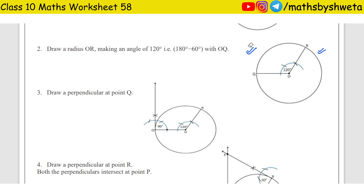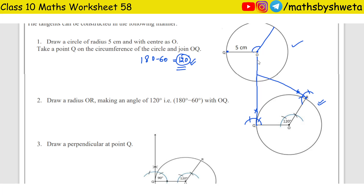Now, why do you have to make a perpendicular? It means making a 90-degree angle. So make a semicircle, cut on the 60-degree and 120-degree arcs, then join both points. We extend until they cut on both sides and join them. So this gives you 90 degrees and this gives you 90 degrees. You can measure it and see — it will 100% be 90 degrees.